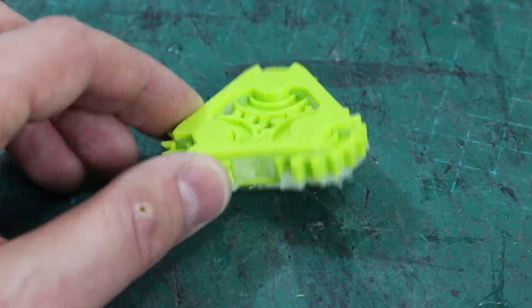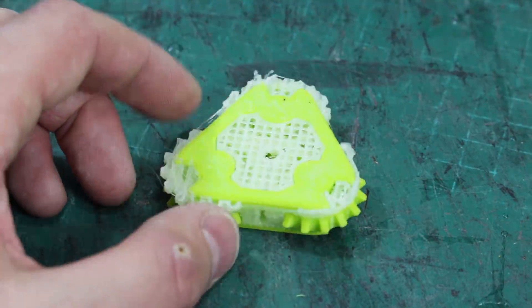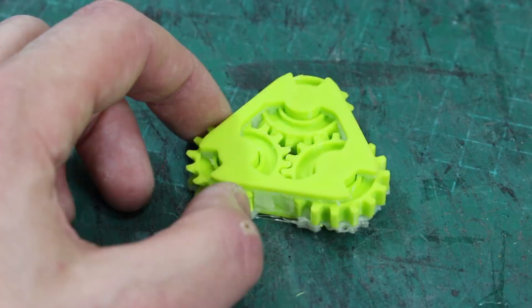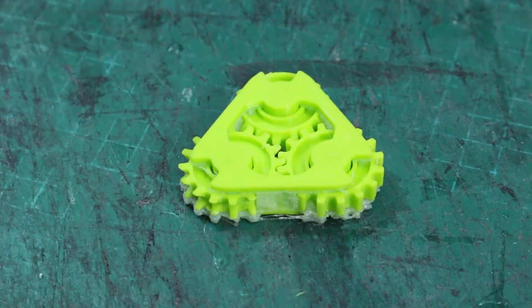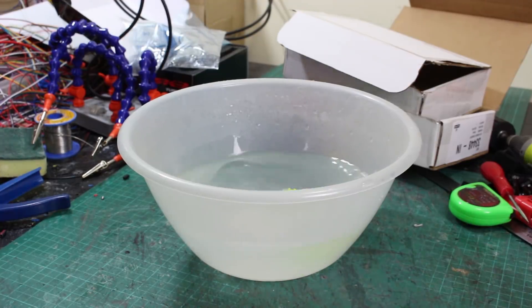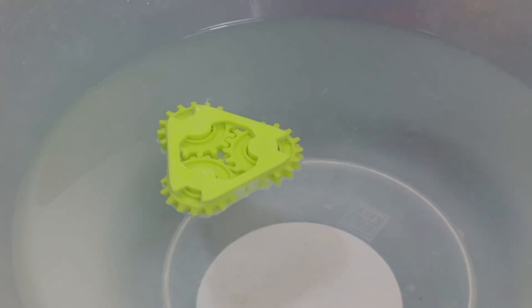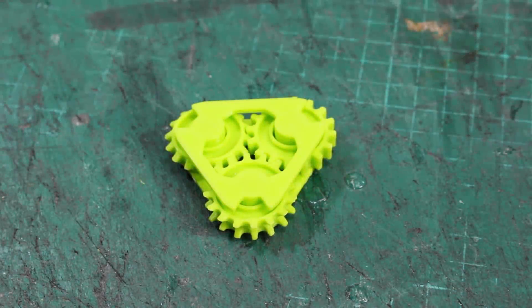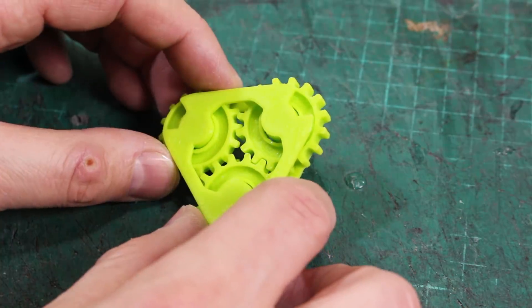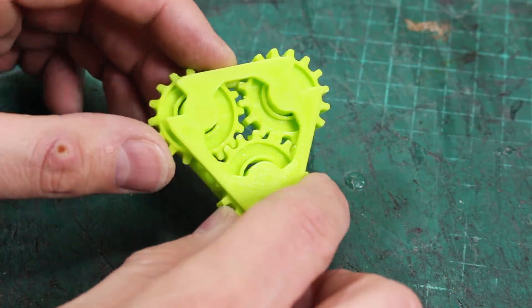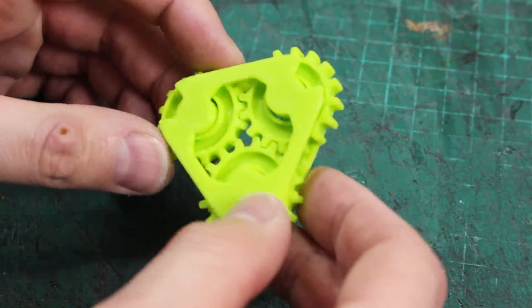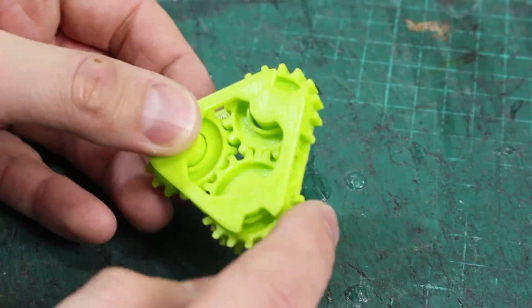Right, here it is. So that's all printed. Obviously, we've got loads of water-soluble there, so we'll pop that in some water and see how long it takes to dissolve. So it's a few hours later. I did give it a bit of a rinse and a bit of a poke to get some of the water-soluble stuff out. I probably would have left it for about four hours for it to completely dissolve. And there we go.